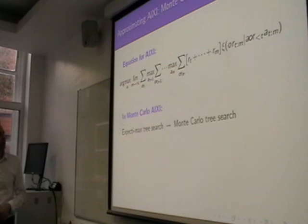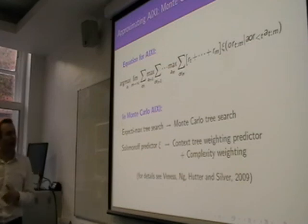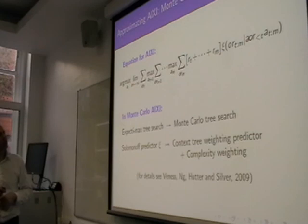He took the Expectimax tree, which is listed here, and he used Monte Carlo Tree Search like they use in Go. And he took the Solomonoff predictor, and he replaced it with particular choice with context tree weighting. And you have to throw in a complexity weighting as well for the complexity of the model, because we want this Occam's razor to come in.